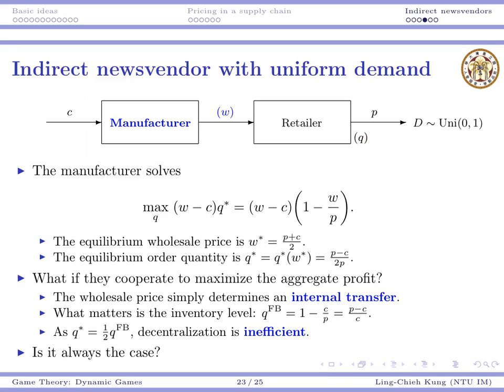We want to ask several questions. First, is it always the case that from centralization to decentralization the order quantity becomes one-half? And if not, is it always true that the quantity becomes smaller under decentralization? These questions require analysis beyond the uniform distribution assumption, since demand can follow many different distributions.